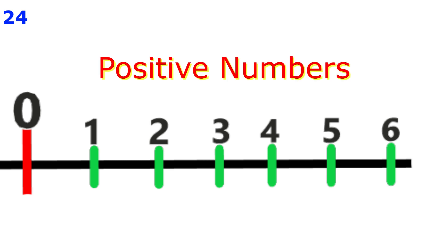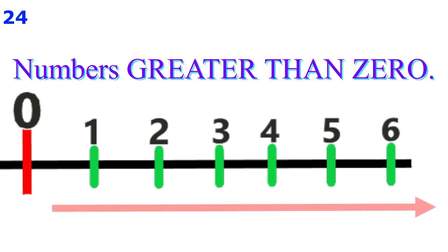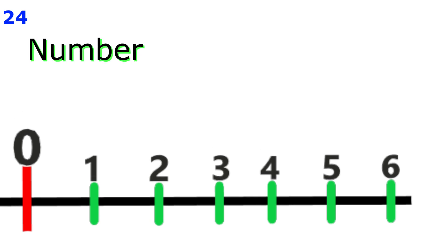Positive and positive number is the opposite word of negative and negative number. Numbers greater than zero are referred to as positive numbers. If there is no sign in front of a number, the number is positive.